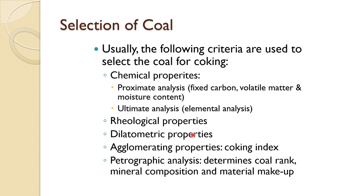Dilatometric properties are also important — when coke starts fusion and gaseous products emerge, it swells and exerts pressure. These properties tell us how the coal will behave during coking, important for coke oven design. Similarly, agglomeration properties using the coking index — how it agglomerates after evaporation of tar and other materials — and of course petrographic analysis, which determines coal rank, mineral composition, and material makeup, because based on that you select the coal suitable for coking purpose.